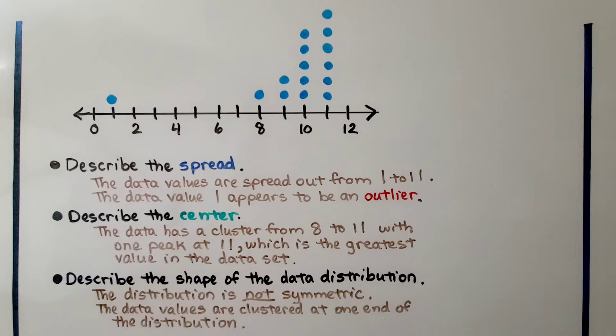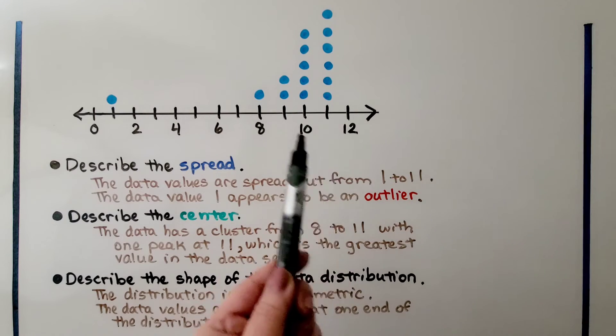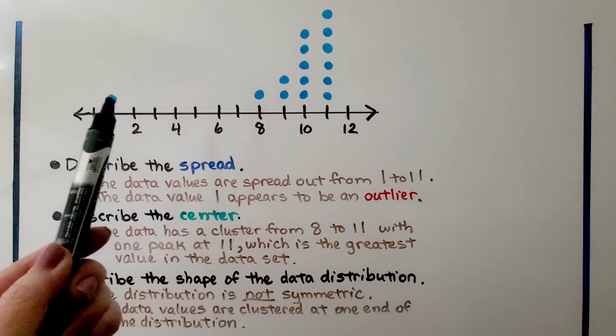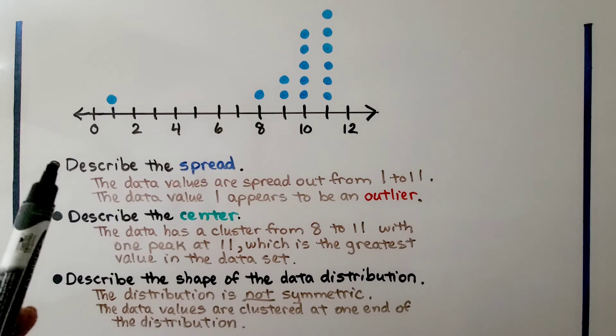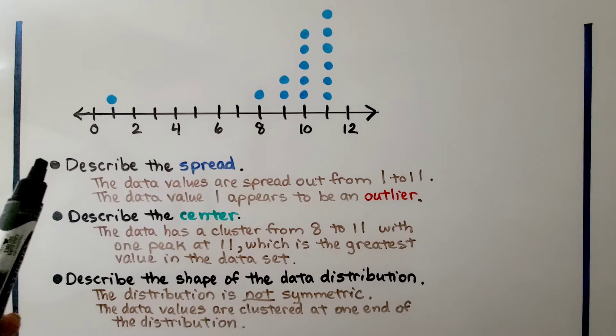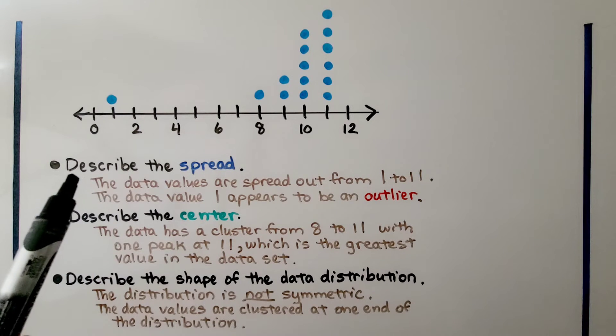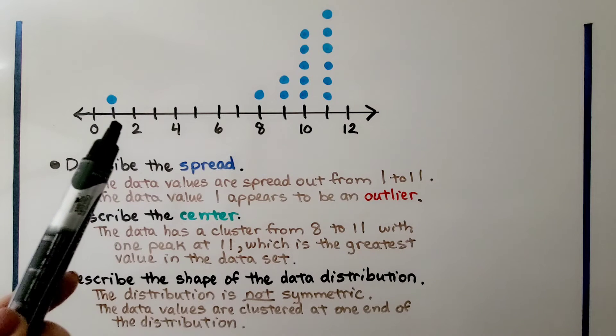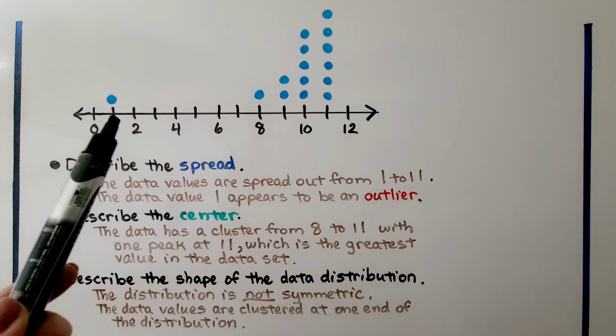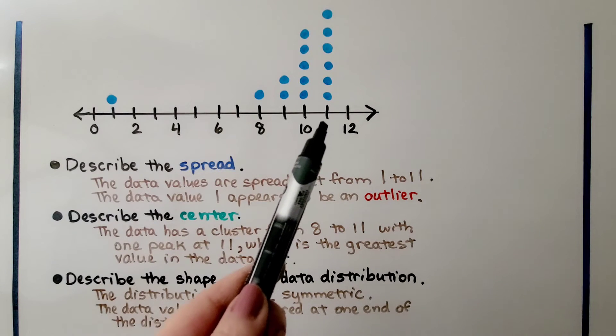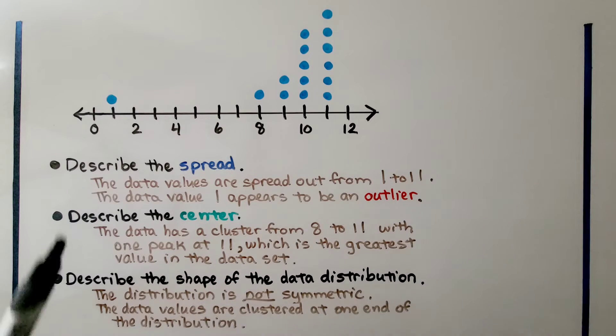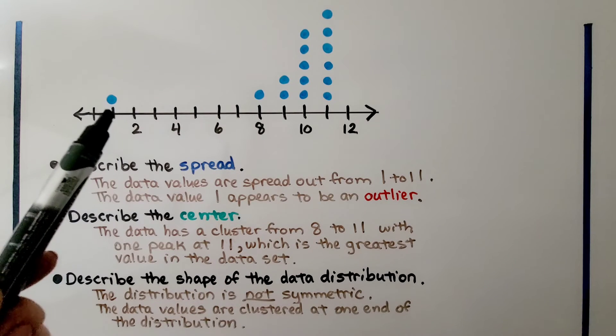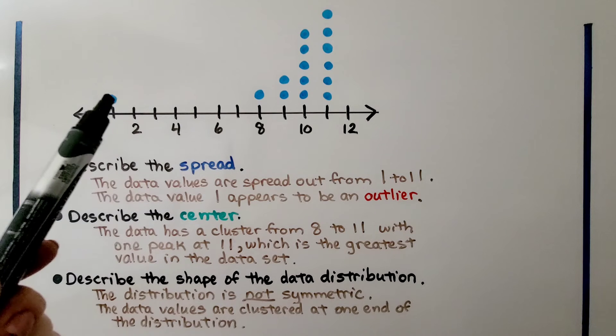Take a look at this dot plot. They're all on this side of the number line, but we have one outlier over here. We need to describe the spread. The data values are spread out from 1, this is between 0 and 2 so that's a 1, all the way up to 11. And the data value 1 appears to be an outlier. It's way less than the other values.